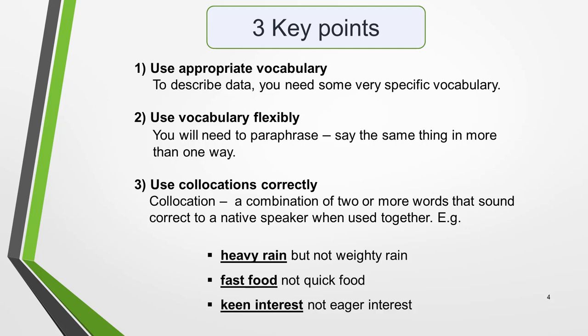There are three key things you need to do to get a high score. Correct spelling is obviously essential. The first thing is to use appropriate vocabulary. In your task 1 essay you'll be describing data, and this requires some very specific vocabulary that you might only use in this part of the exam. This is what the marking criteria refers to when they mention precise meanings and less common lexical items. Second, you need to be able to use vocabulary flexibly — you need a wide enough range of vocabulary that you can say the same thing in more than one way, that is, paraphrase.